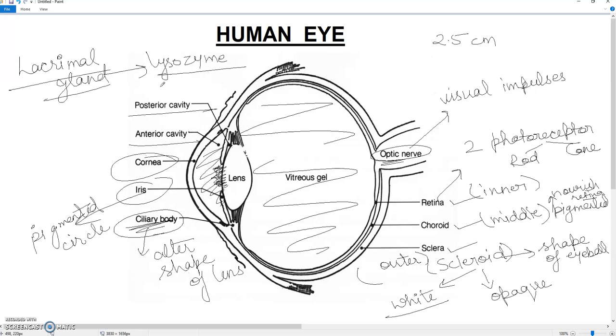And then there is one point missing here because the conjunctiva is not labeled here. The part covering the cornea is called conjunctiva, so you can mark this part as conjunctiva. The function of conjunctiva is to protect the cornea. It is a thin layer which is present over the cornea.